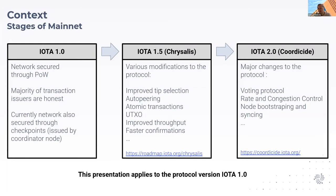In parallel, to get rid of this coordinator node, there is a Coordicide upgrade, which means we disable the coordinator and introduce a new voting protocol, rate and congestion control mechanisms, and other improvements.